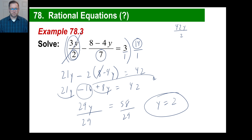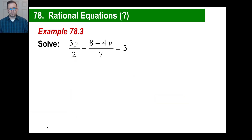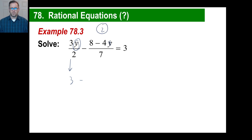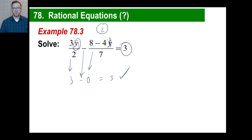You can always check these. We say the answer is 2 — let's put it in. What is 3 times 2? That's 6. 6 divided by 2 is 3, so this part turns into 3. Now 8 minus 4 times 2 is 8 minus 8, which is 0. 0 divided by 7 is still 0. So we have 3 minus 0, which equals 3. That proves the answer is correct.